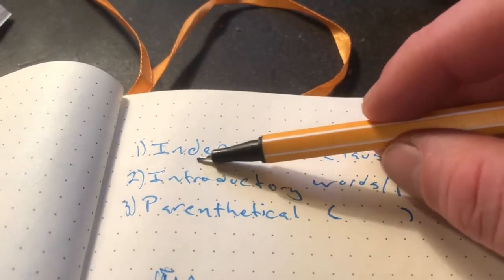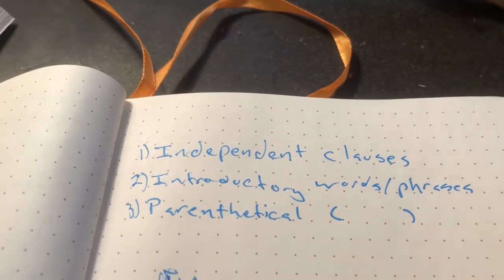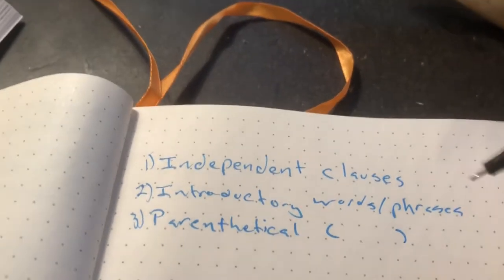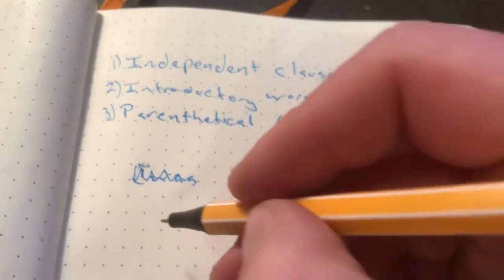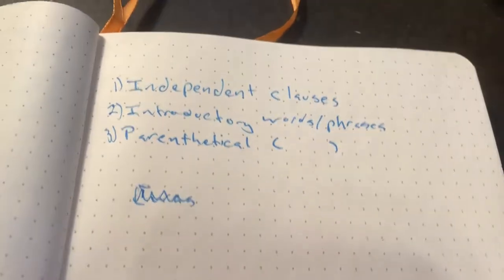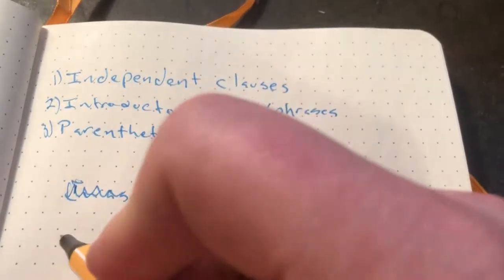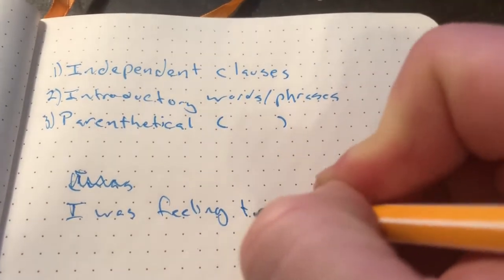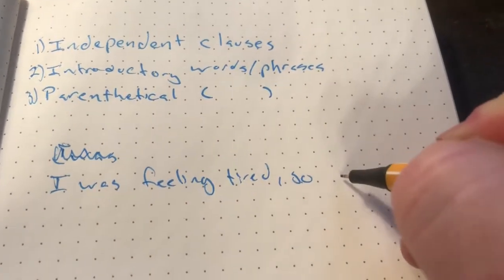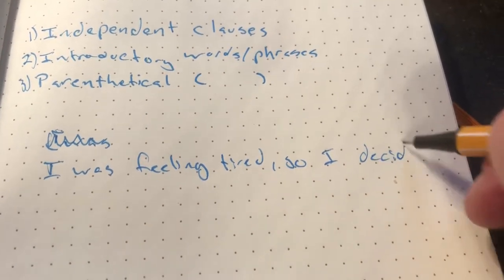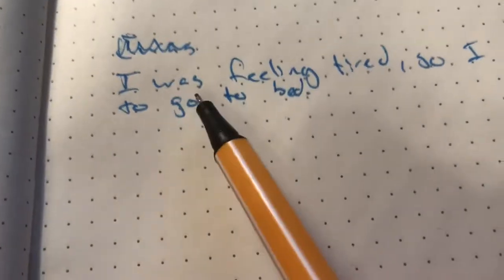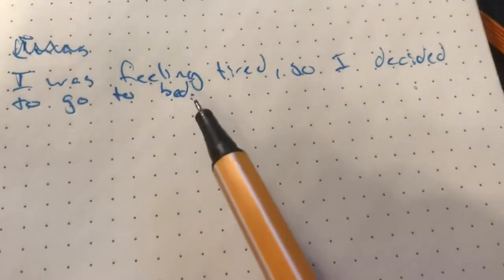The first usage of commas that we're going to look at is independent clauses, commas used in independent clauses. I'm going to give you an example of what that would look like and then we'll explain. So here would be like commas used within independent clauses. Let's say I was feeling tired, so I decided to go to bed. So let's take a look at this. You can see where I used the comma.